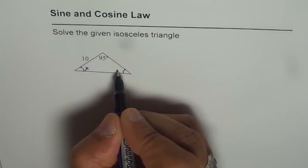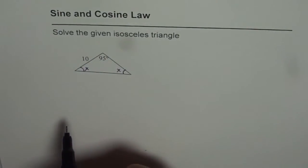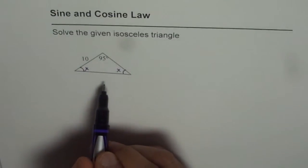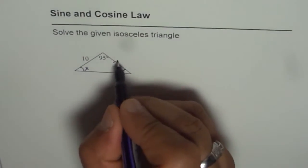We cannot have two angles of 95 degrees, correct? That would be more than 180. So we have these two angles equal. Now if these two angles are equal, then sides opposite to them will also be equal. That means that side should be 10.